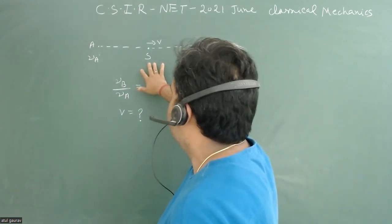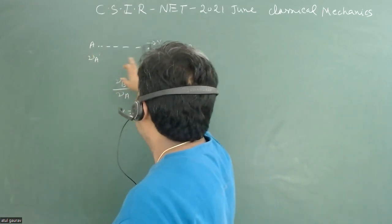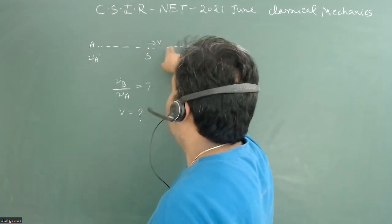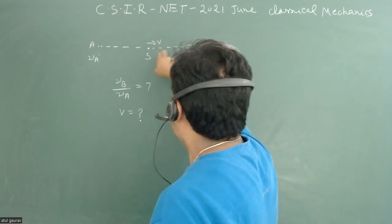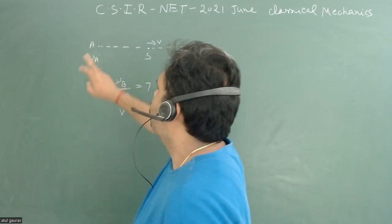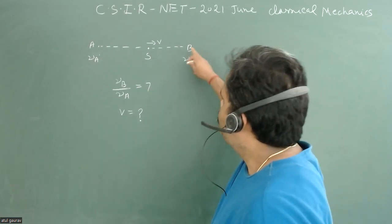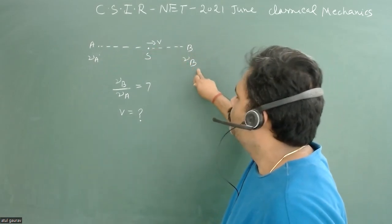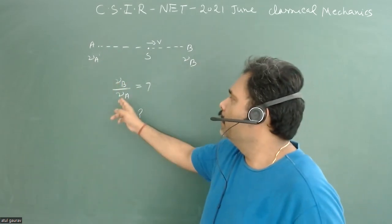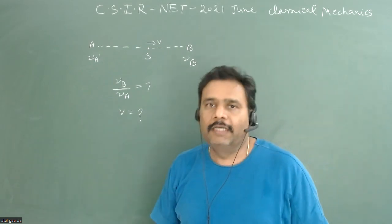There is a source of radiation moving away from observer A and towards observer B with speed v. The observed frequency for B is ν_b and for A is ν_a. It is given that ν_b upon ν_a is equal to 7. We have to find the value of v.